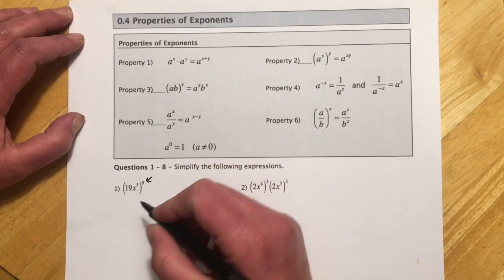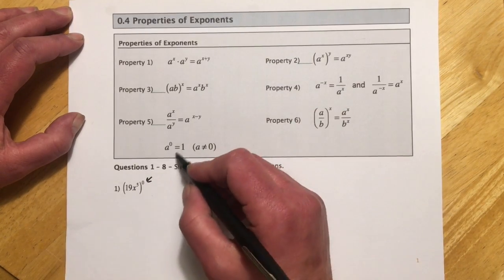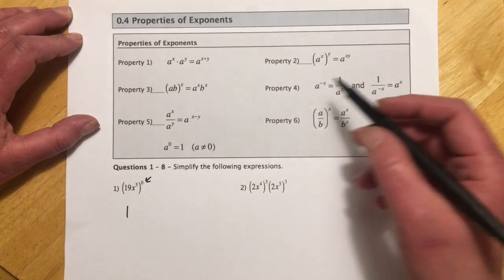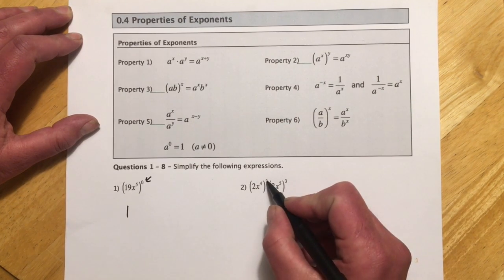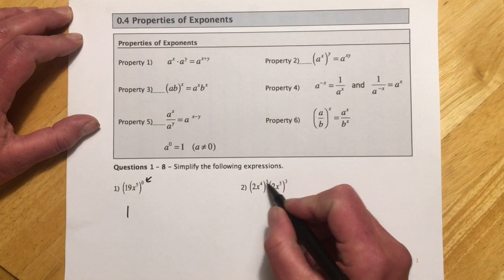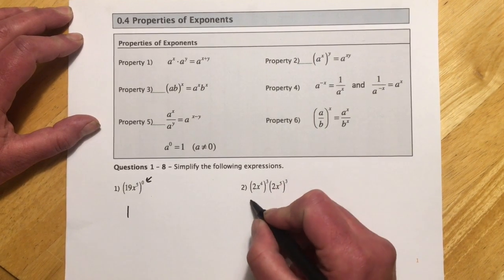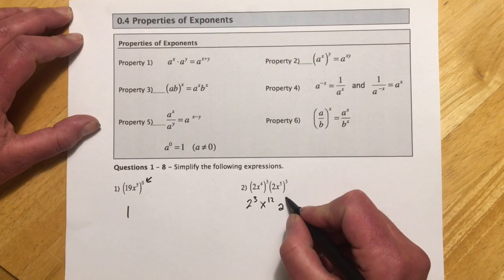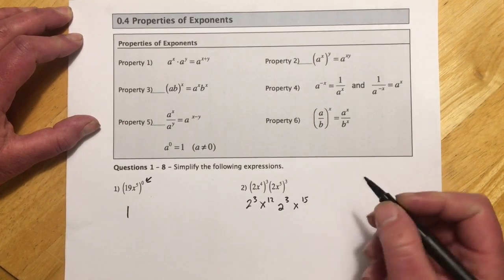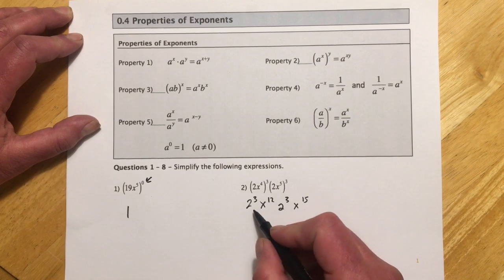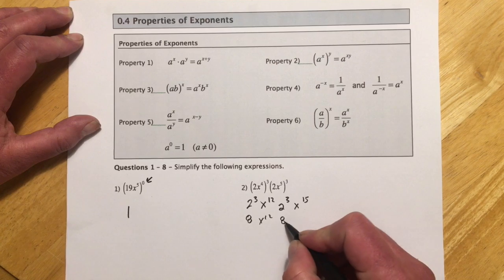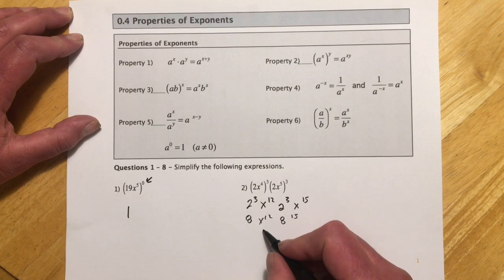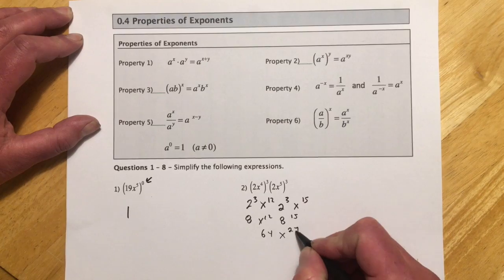So this first one is kind of a trick. Anything to the 0 other than 0 is 1, so this is just a very fancy one. For the second one, we're going to use property 2 first. The biggest error people make here is they forget to do the numbers — they get locked up doing the exponents and forget to make this 2 cubed. So we get 8x to the 12th, 8x to the 15th, and 8 times 8 is 64, and 12 and 15 makes x to the 27th.